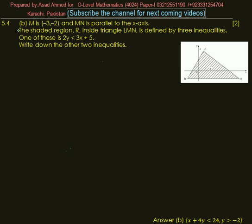Exercise 5.4 part B: M is the point (-3, -2) and MN is parallel to the x-axis. The shaded region R inside triangle LMN is defined by three inequalities.